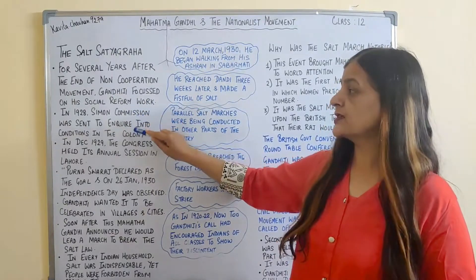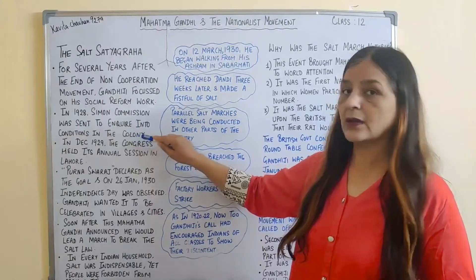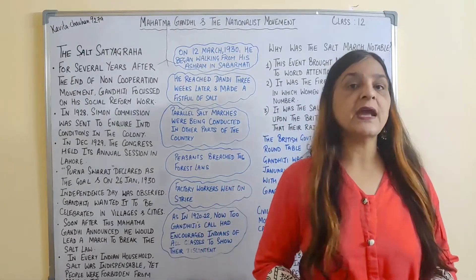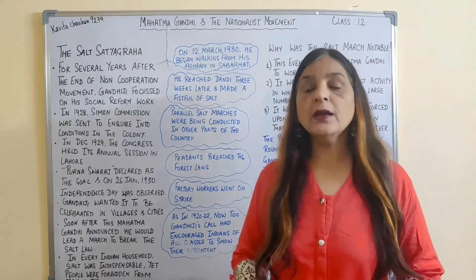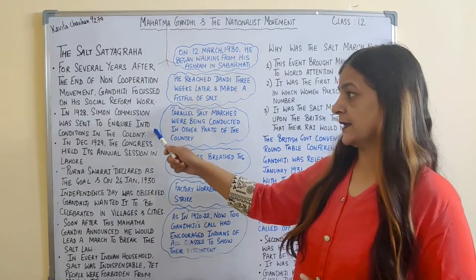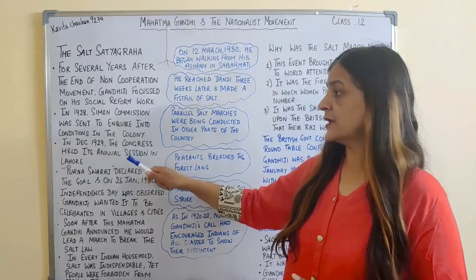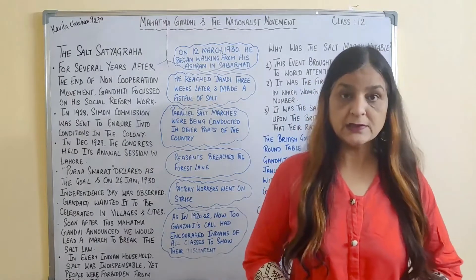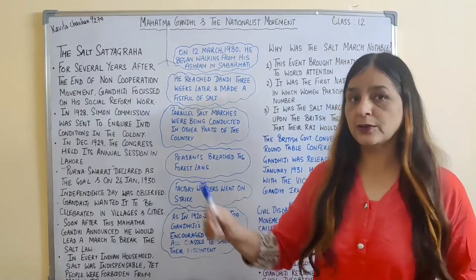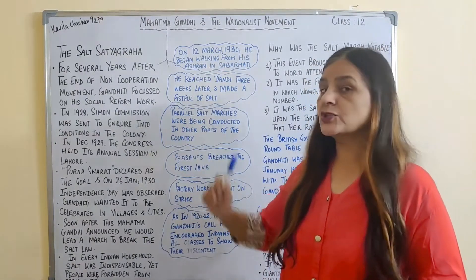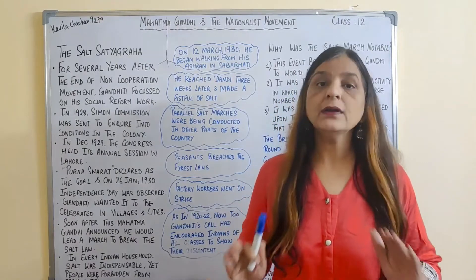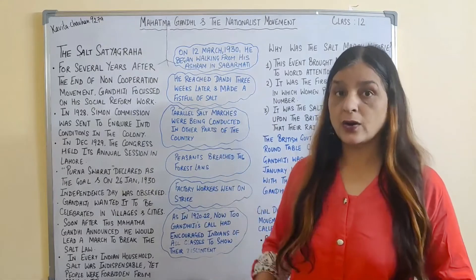In 1928, the Simon Commission was sent to inquire into conditions in the colony. Since it was headed by Sir John Simon, it was called the Simon Commission. When the Simon Commission came to India, it was opposed by the Indians who called for it to go back. In fact, Lala Lajpat Rai got injured during this protest and later died. Indians felt there was no Indian member — all were Englishmen. Congress had its annual session in Lahore in 1929.